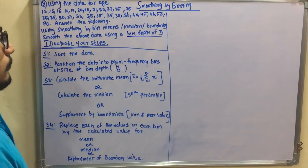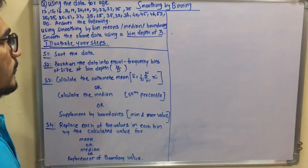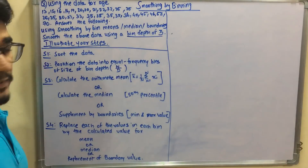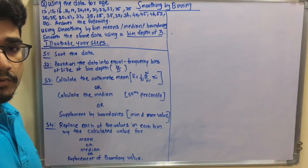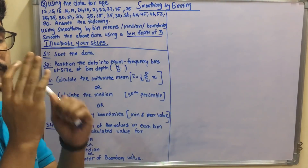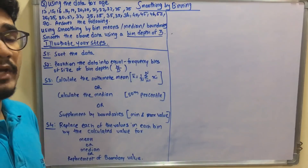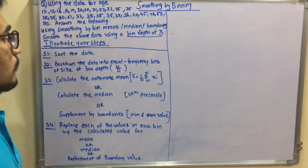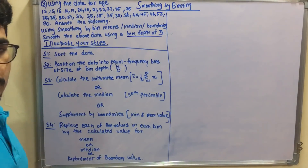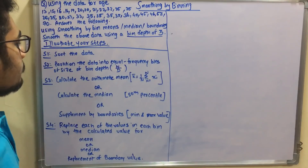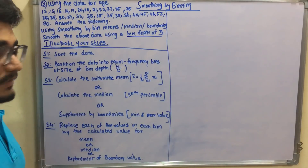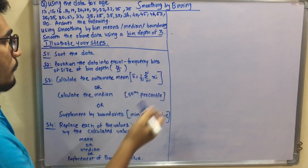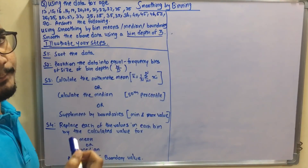The first step for all three smoothing-by-binning approaches is to sort the data. You must always sort the data first, otherwise your answers and calculations will be wrong. Always sort the data in ascending order before doing anything else.